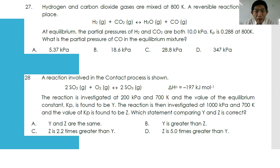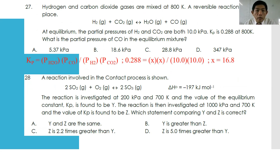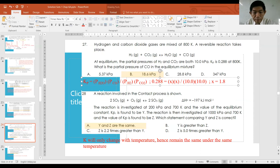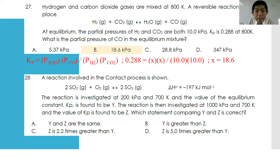Number twenty-seven: hydrogen and carbon dioxide gases are mixed at 800 K. At equilibrium, partial pressures of H₂ and CO₂ are both 10 kPa, and Kp = 0.288 at 800 K. What is the partial pressure of CO? Using Kp = (p(H₂O) × p(CO)) / (p(H₂) × p(CO₂)) — since H₂O and CO share the same pressure, let both equal X. Solving gives X = 18.6 kPa. The answer is B.